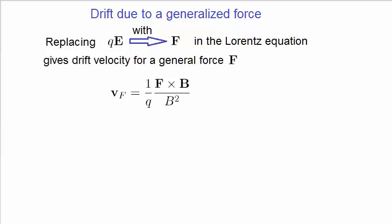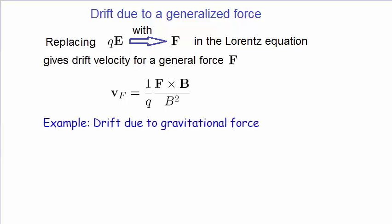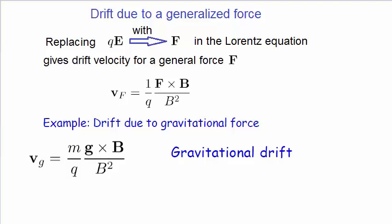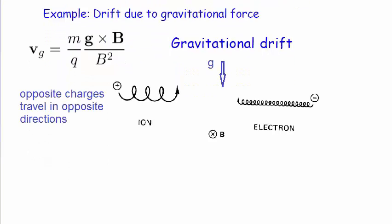Let's look at an example of applying this general drift velocity formula. Charged particles subjected to a gravitational force in the presence of a magnetic field will undergo drift. We replace the general force F with the gravitational force Mg, which results in the gravitational drift velocity Vg. Taking the gravitational force as acting downwards and the magnetic field into the page, we find that the two types of charges drift at right angles to both the gravitational and magnetic fields. However, the two charges now drift in opposite directions because their charge is explicitly in the drift velocity formula. Moreover, they drift at different velocities because their mass is explicitly in the formula.